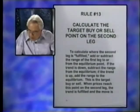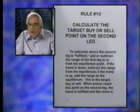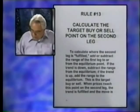If the trend is down, subtract the range from the equilibrium. If the trend is up, add the range to the equilibrium. This is the target buyer's sell. When prices reach this point on the second leg, the trend is fulfilled and the move is over. You must exit at this point to avoid the counter trend.